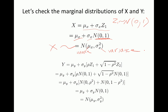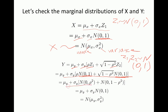Now let's look at y. We construct y using mu y, sigma y, and rho as constants, with z1 and z2 normally distributed with mean zero and variance one and independent. We can write y as a sum of two independent normally distributed variables: one with mean zero and variance rho squared, and the other with mean zero and variance one minus rho squared.